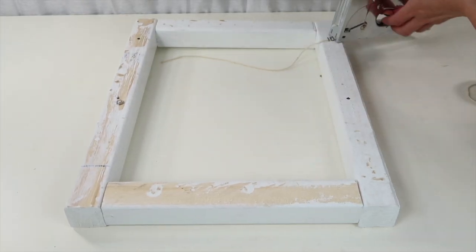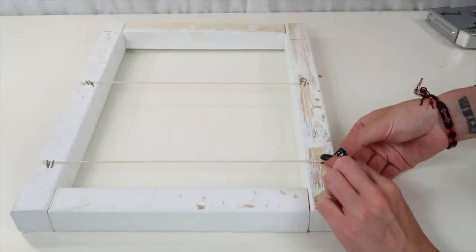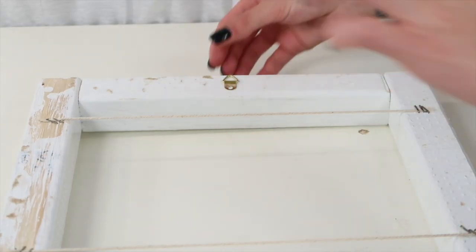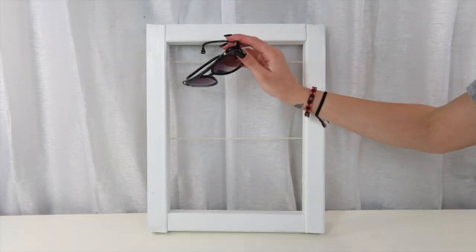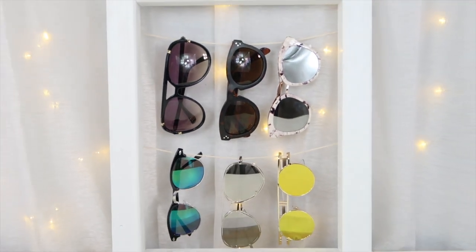And now we're just going to use our staple gun and staple these strings to the back of our frame. And now you can either hang it on a nail right on its frame or what I'm going to do is use a little hook and that way I can just hang it from that. And now we're just going to add our sunglasses and this is how it looks once I've finished.